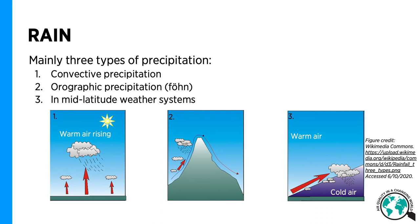There are three main types of precipitation. Convective precipitation, where warm air rises, water condenses and precipitates. Sometimes the rising of air is forced by the surface, and orographic precipitation is formed uphill of mountains. After the mountain, the air is dry and warm, and a dry foehn wind can be observed. Also, in mid-latitude weather systems, warmer subtropical air is forced to rise above colder polar air, forming continuous long-term precipitation.